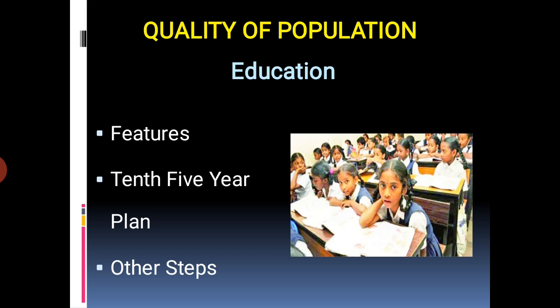The government has taken many steps towards providing elementary education to all. The primary school system has expanded. The government initiative of Sarva Shiksha Abhiyan aims at providing elementary education to all children in the age group of 6 to 14 years. The Midday Meal Scheme has been implemented to encourage attendance and retention of school children and improve their nutritional status.